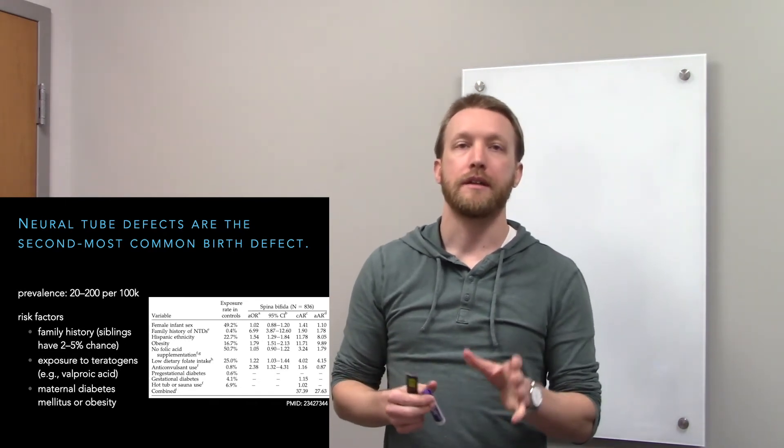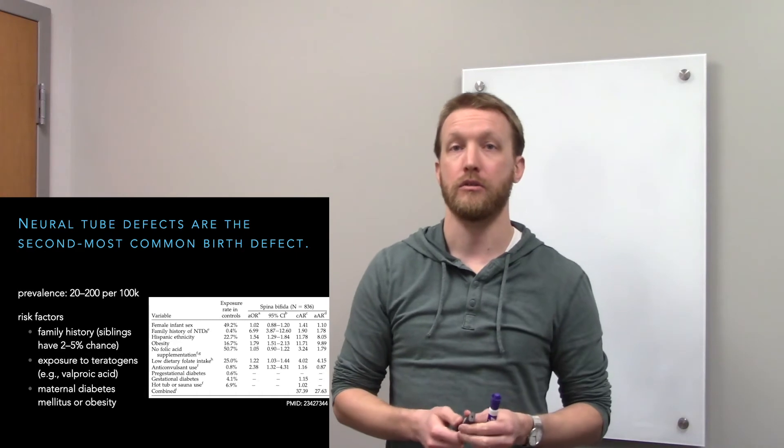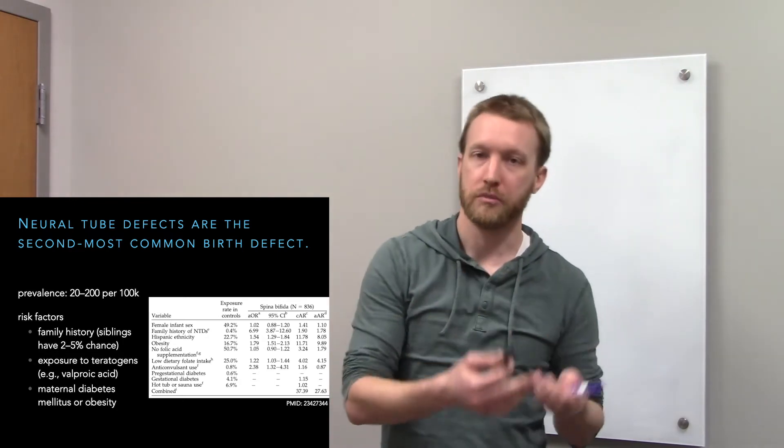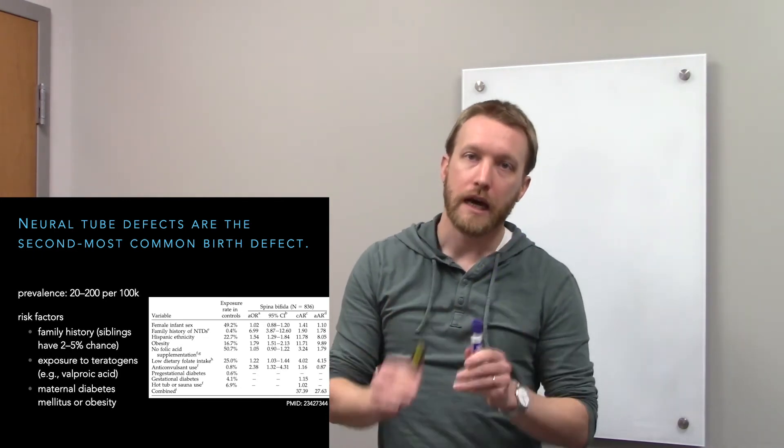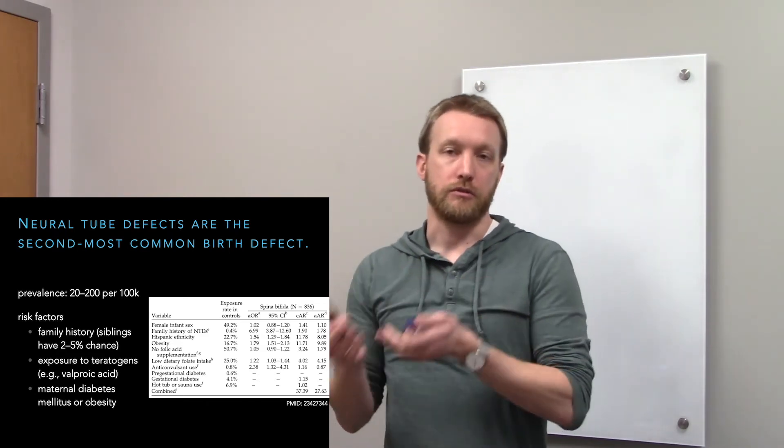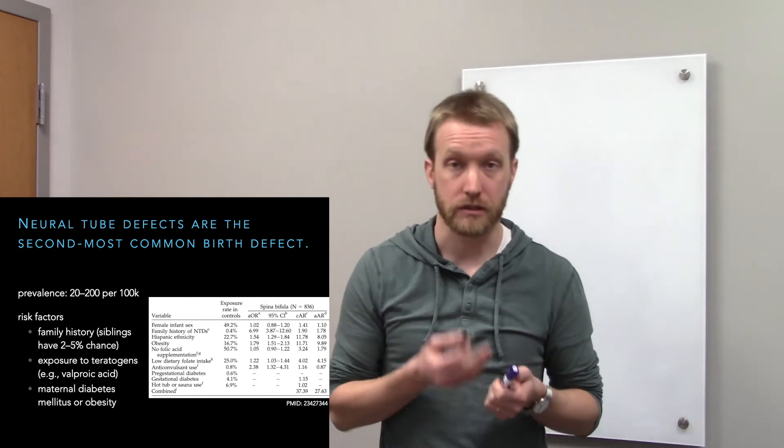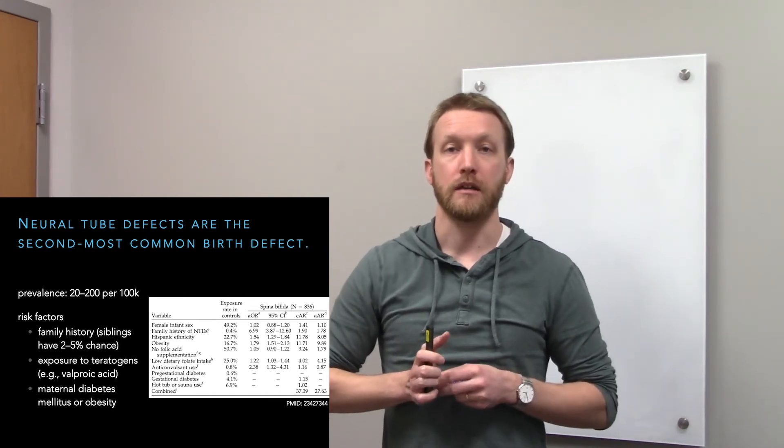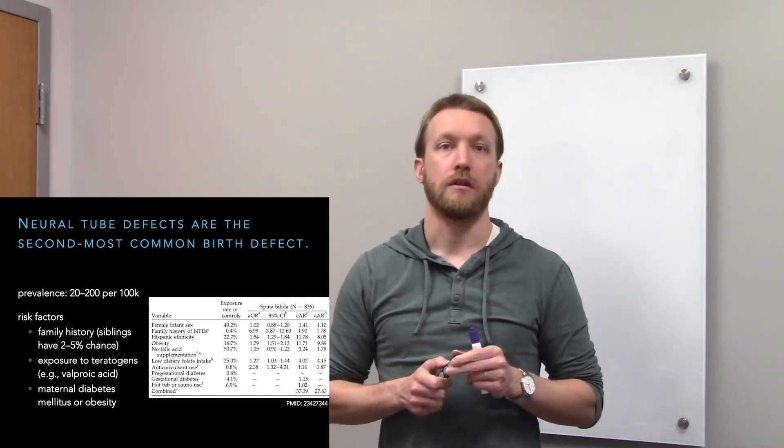There are other things related, such as maternal diabetes or obesity. We can see that in this table here. The odds ratio is 1.79. You look at the 95% confidence interval, it doesn't have one. So maternal obesity increases the risk of neural tube defects, as does diabetes. Another thing I want to highlight, the low dietary folic acid or folate intake. There's a relationship between folic acid and neural tube defects, where low levels increase the risk, and folic acid supplementation decreases the risk.